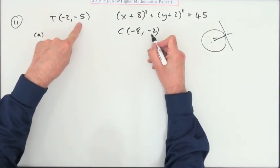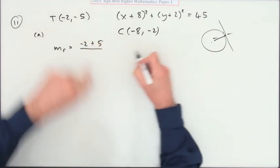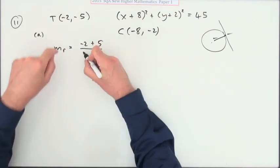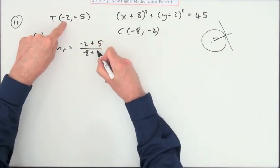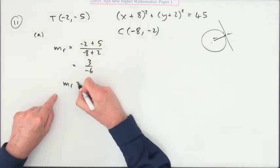I'm not going to settle that out. So that will be negative 2 take away negative 5, so it'll be plus 5, difference in the x's, negative 8 take away 2, so it'll be add 2. So that's 3 over negative 6, so the gradient of the radius is negative a half.